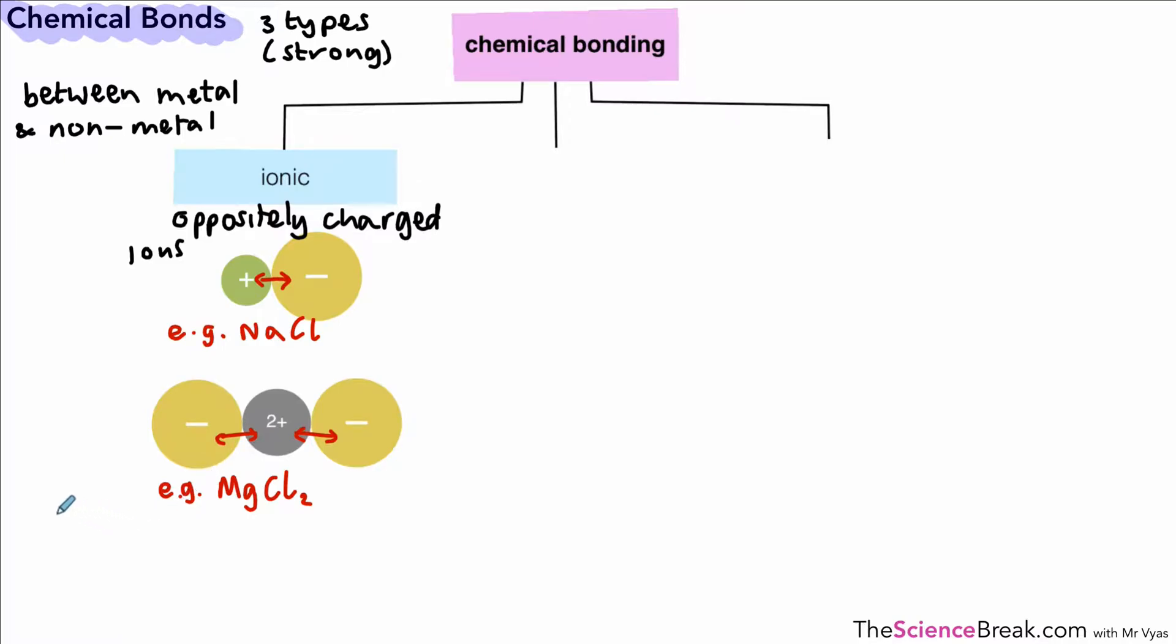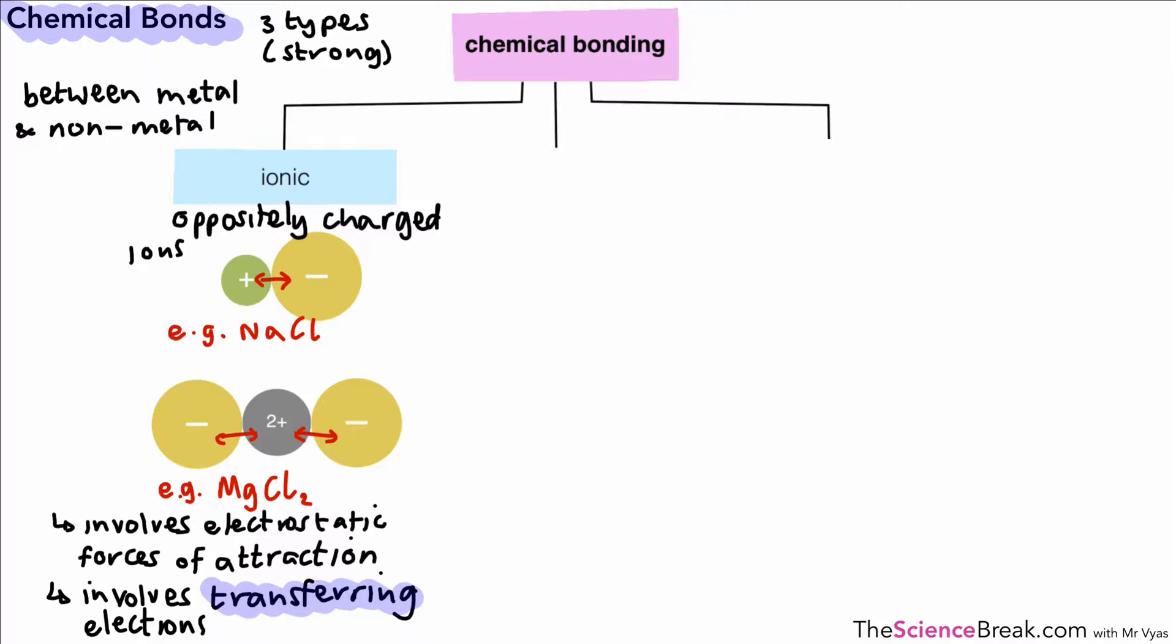Let's make two important points about ionic bonds. First, it involves electrostatic forces of attraction. Those arrows in red show forces of attraction, but the key term is electrostatic forces of attraction, occurring between opposite charges. The ionic bond also involves transferring electrons. To create an ionic bond, we need the transfer of electrons from one atom to another and the formation of ions. We're going to look at that in detail in the next video.